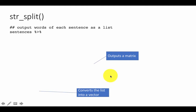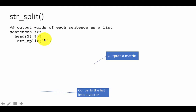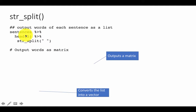Here we output the words of each sentence as a list. We take sentences, head five, and then do str_split with space. For every sentence we want to split it into corresponding words. If you use str_split here you are going to get back the result as a list. If there are 100 sentences, the list is going to have 100 elements. Each element is a vector of the words in that particular sentence.